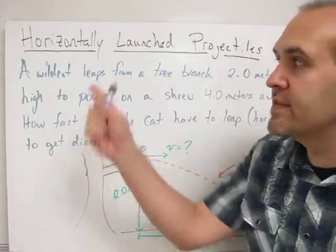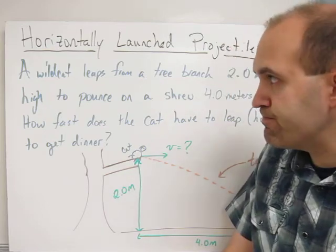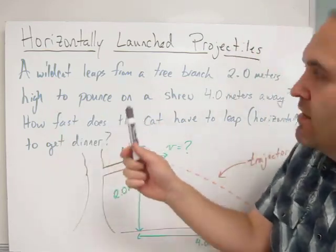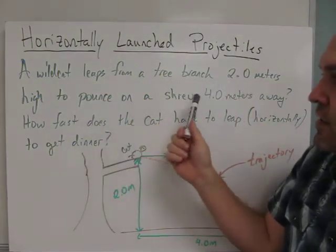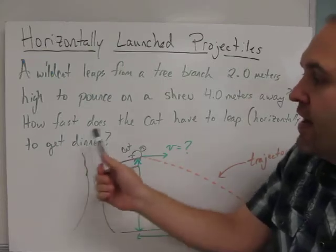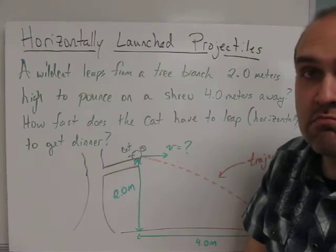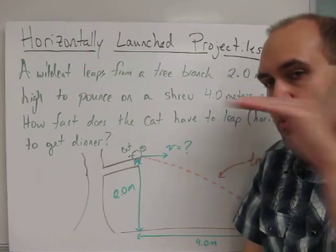Hi, this video is about horizontally launched projectile problems and how to solve them. Imagine that we have a wildcat in a tree and it leaps from the tree branch which is two meters high to pounce on a shrew four meters away. How fast does the cat have to leap in order to get dinner, assuming that the cat leaps horizontally, not up or down but just sideways?